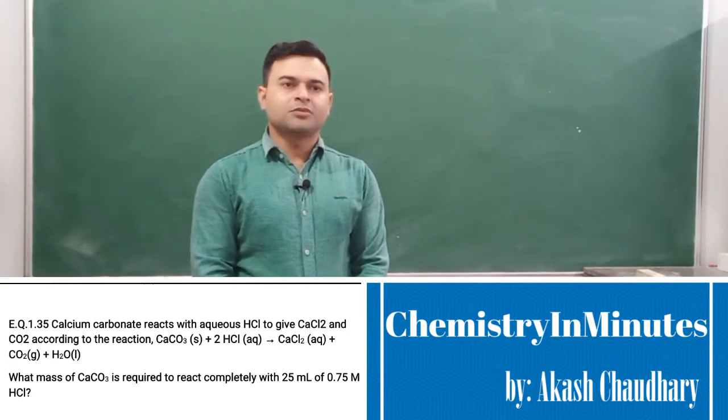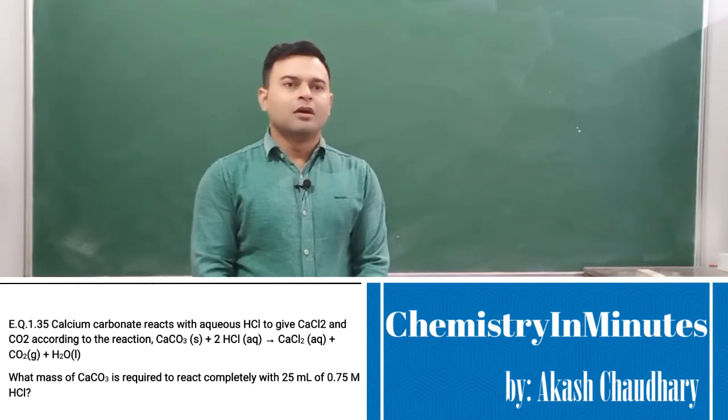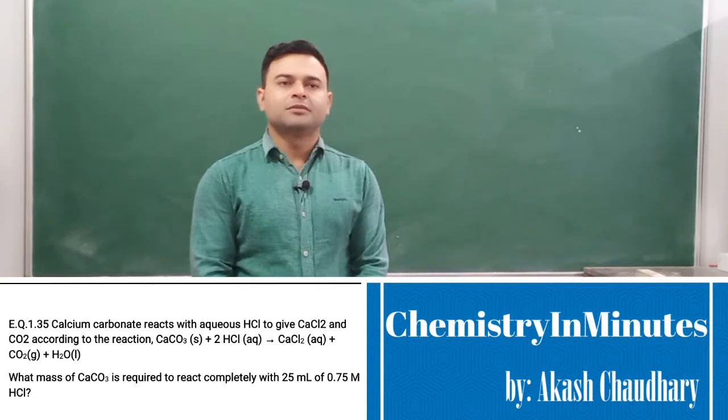The question is: calcium carbonate reacts with aqueous HCl to give CaCl2 and CO2 according to the reaction CaCO3 (s) + 2 HCl (aq) → CaCl2 (aq) + CO2 (g) + H2O (l). What mass of CaCO3 is required to react completely with 25 mL of 0.75 M HCl?